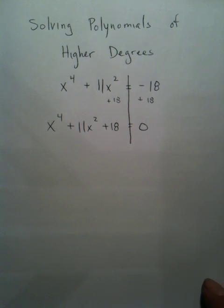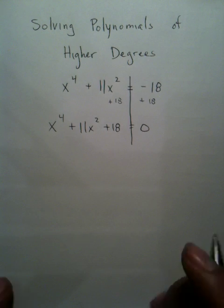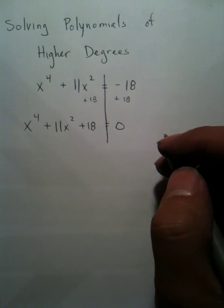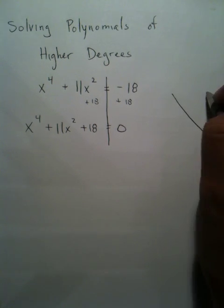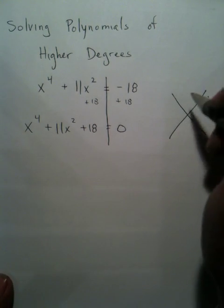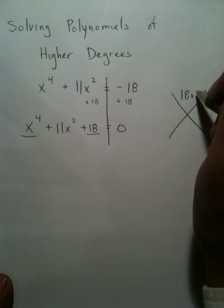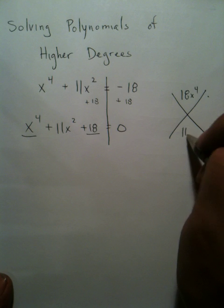Well, it's a trinomial, so your best bet is the guess-and-check method, or what I call the magic X. To set up your magic X, you're looking for this and this multiplied together, and this middle term down below.